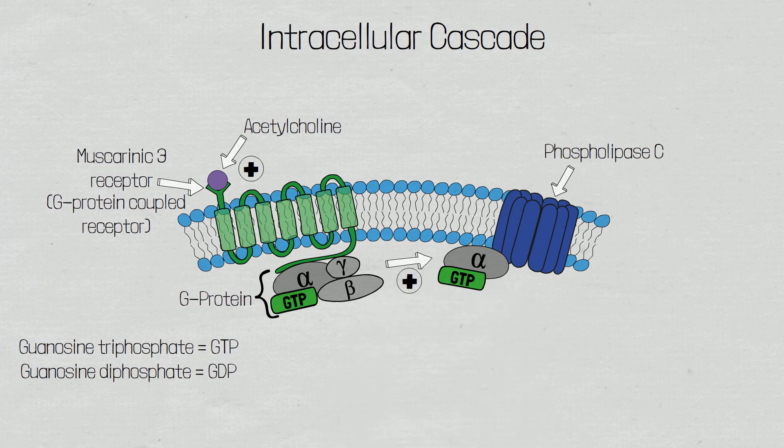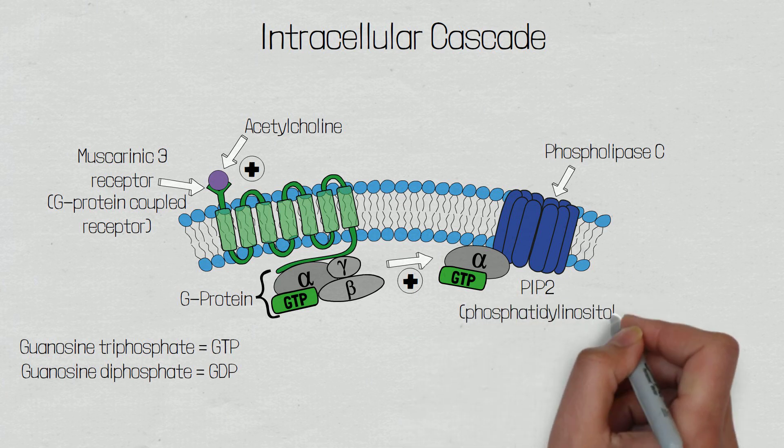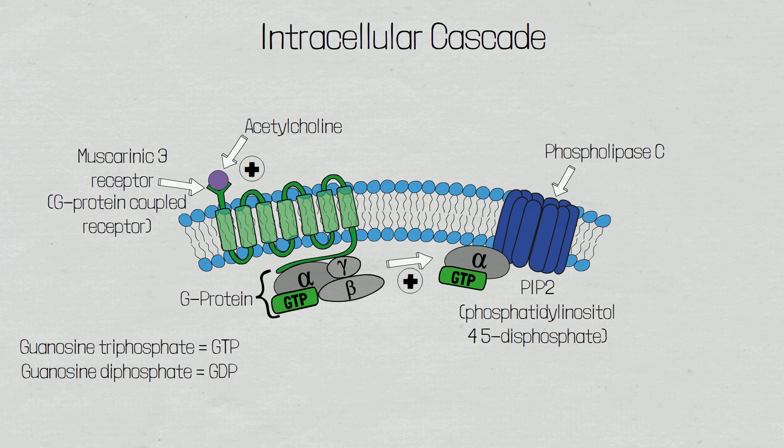Phospholipase C is an enzyme that breaks down phosphatidyl inositol 4,5-diphosphate, which we denote as PIP2, and produces two second messengers from the breakdown of PIP2. And remember that a second messenger is simply an intracellular signaling molecule that causes a physiological change within a cell.